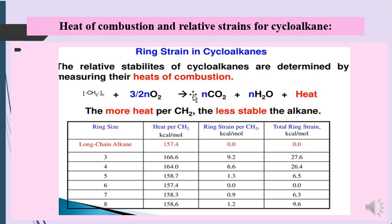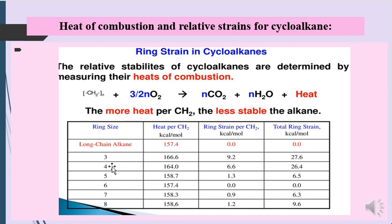The relative stabilities of cycloalkanes are determined by measuring their heats of combustion. For long-chain alkanes, the reference value is 157.4 kcal/mol per CH₂, giving zero ring strain. For cyclopropane (ring size 3), heat per CH₂ is 166.6 kcal/mol, giving a relative strain of 9.2 kcal/mol per CH₂ and a total ring strain of 26.4 kcal/mol.